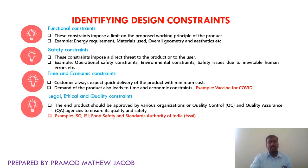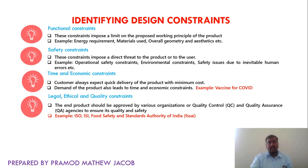Next is legal, ethical, and quality constraints. We cannot simply make a particular product — we have to follow quality control standards and quality assurance agencies to ensure the quality and safety of the product being delivered. For food products, there is FSSAI — Food Safety and Standards Authority of India — which certifies food packets. Other standard authorities like ISO and ISI are also available in India.